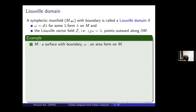The first two speakers this semester already talked about Kaya category, but I'd like to review it briefly. A Liouville domain is a symplectic manifold with boundary such that the symplectic form omega is exact — there is a one-form lambda whose differential is exactly omega. The Liouville vector field, which is the dual of lambda with respect to omega, points outward along the boundary of M.